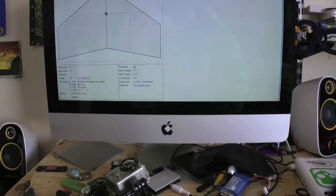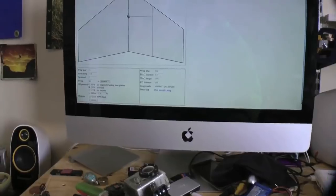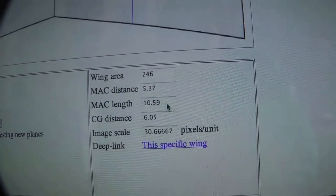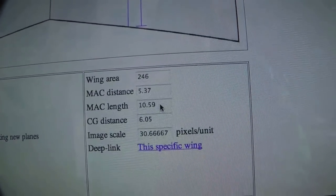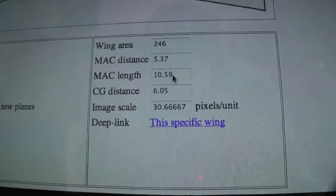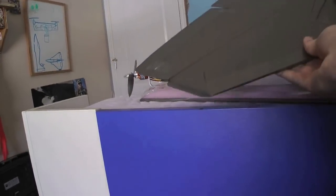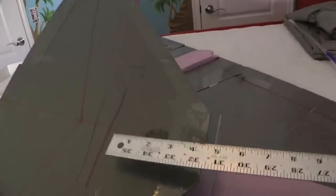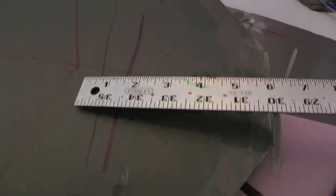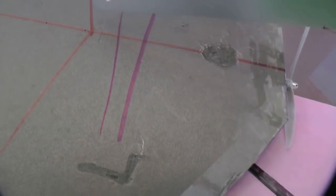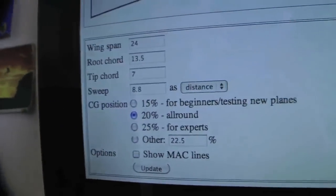So the wing area is 246 square inches. The MAC, mean aerodynamic chord, is 3.75 inches. But the CG distance, that's what you need right there. See that CG distance? That's 6.5, 6.05 inches. We'll just round that to 6. So then if you go over here and you flip over your delta wing, you should go and measure 6.5 inches back from the nose. So as you can see, 6.5 inches back on mine is about right there. I usually run my CG a little bit farther forward. I usually run it about right there instead of right there, but it would fly right there. So that'll give you an idea where to put the CG.